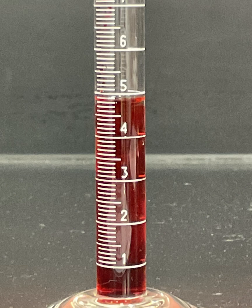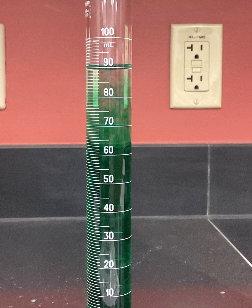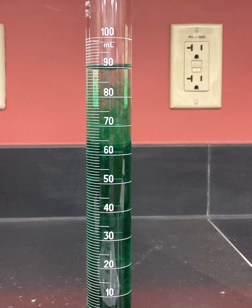To measure volume in a 10 milliliter graduated cylinder, look for the meniscus and record the number with two decimal places. For a 100 milliliter graduated cylinder, you can only record with one decimal place as the estimated number.